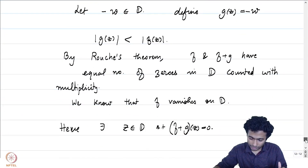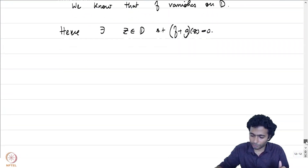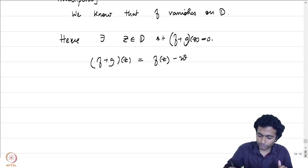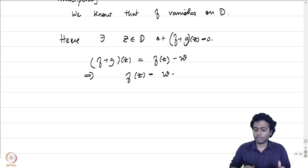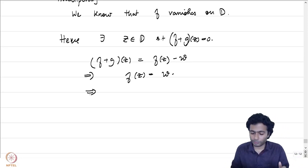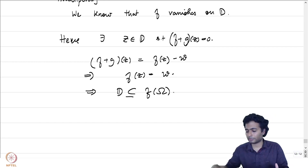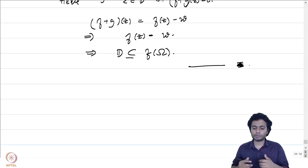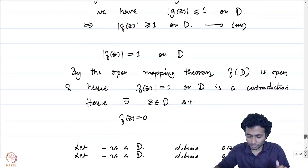Since f vanishes at some point in D by our earlier claim, by Rouché's theorem f + g = f − w also has a zero in D. That means there exists z ∈ D with f(z) = w. Since w was arbitrary in D, we conclude D ⊆ f(ω). Rouché's theorem, together with the maximum modulus principle and open mapping theorem, proves that the unit disk is contained in the image.